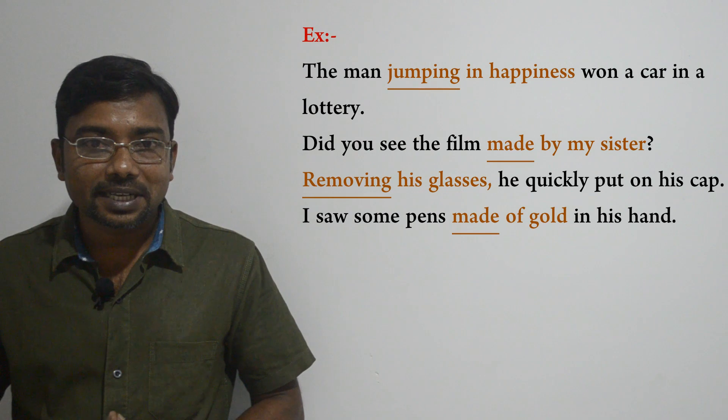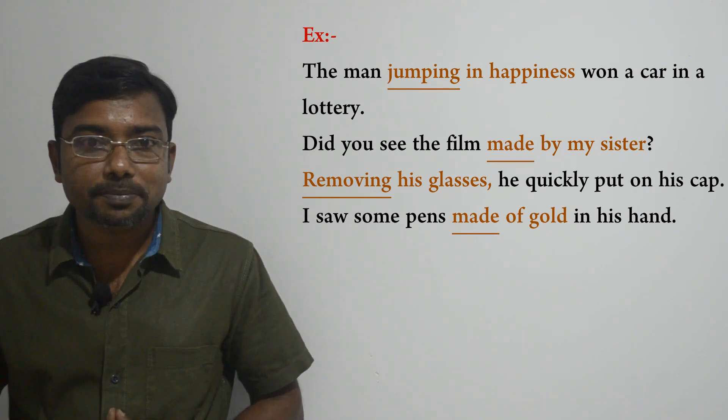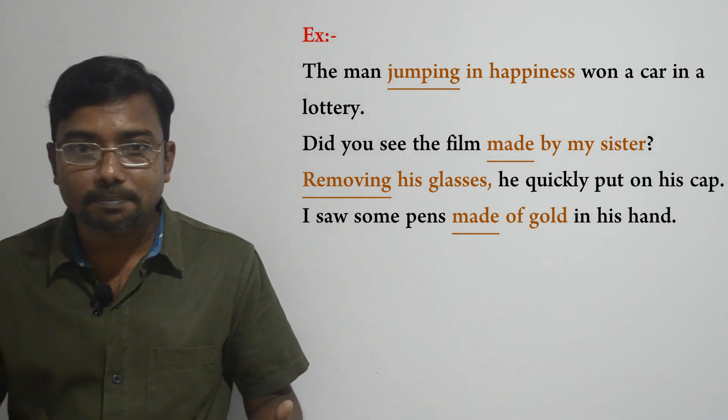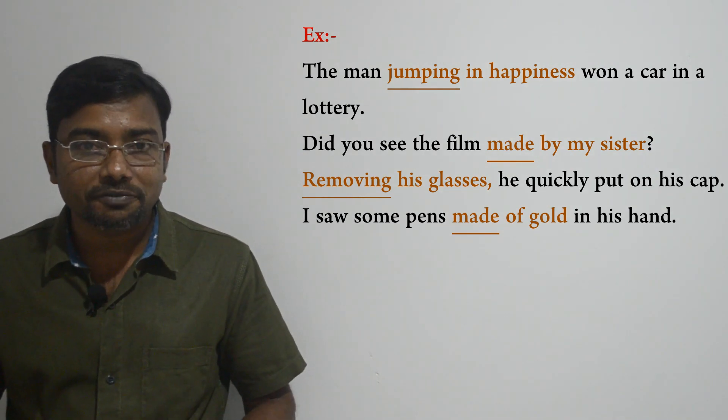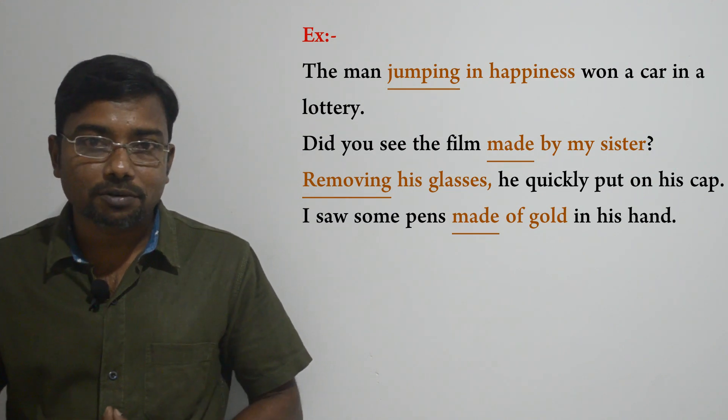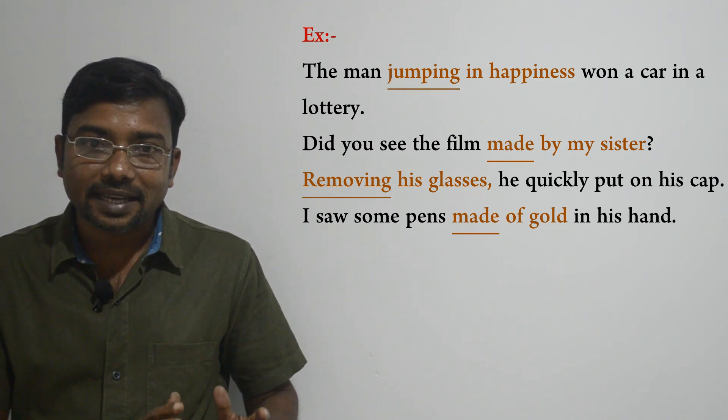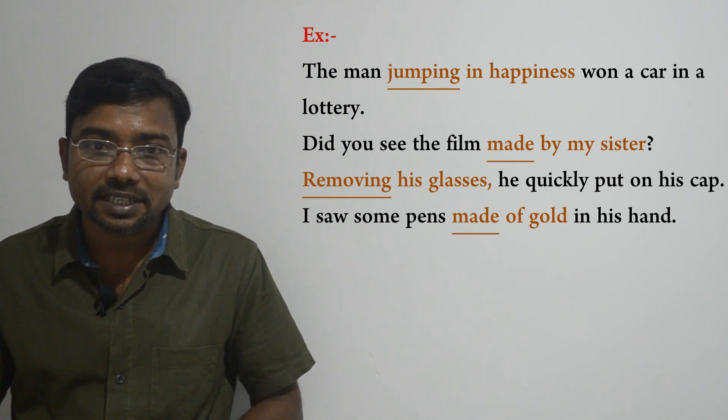When we consider all these examples, it is clear that participle phrases always begin with a participle — either a present participle or past participle. The entire phrase acts as an adjective in the sentence to modify a noun or pronoun. They can appear at the end, middle, or beginning of the sentence. An important point to remember: we always use a participle phrase directly before or after the noun or pronoun it modifies. We cannot place the participle phrase in another position in the sentence.